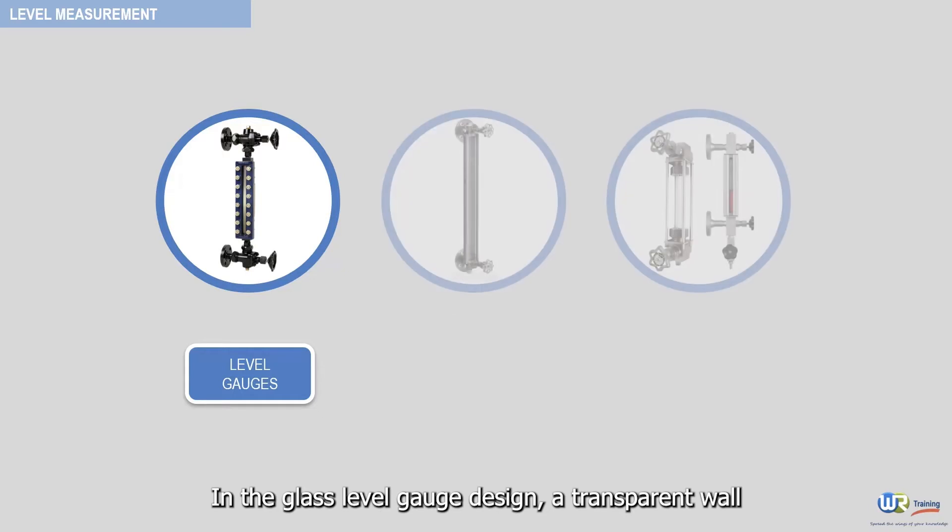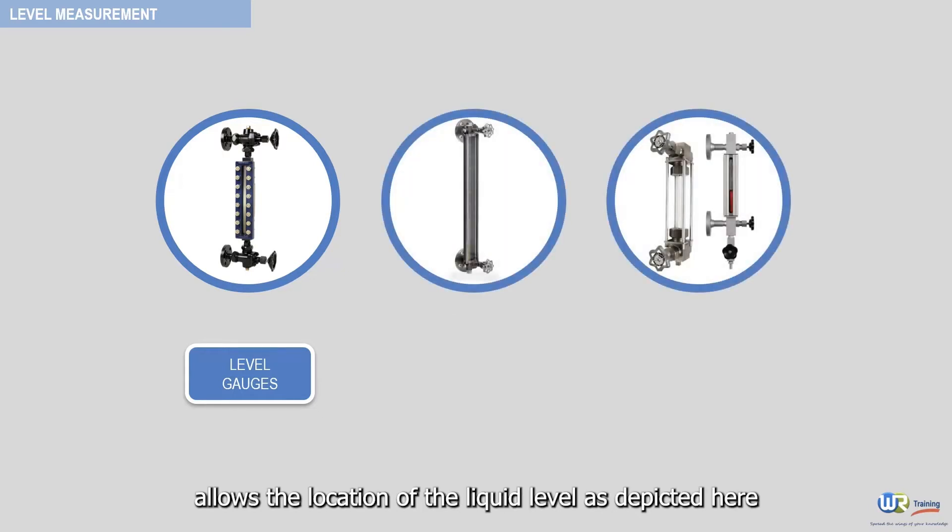In the glass level gauge design, a transparent wall allows the location of the liquid level as depicted here. In general, the wall is made of glass or plastic material.